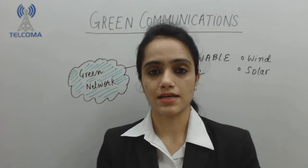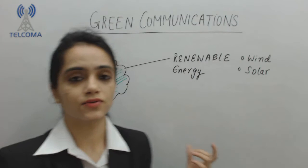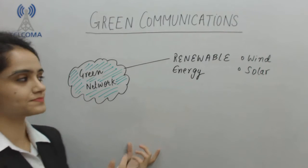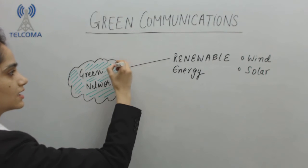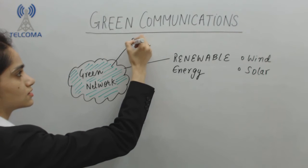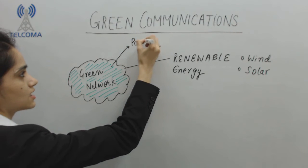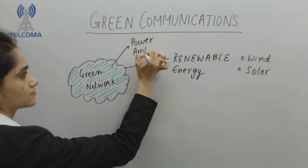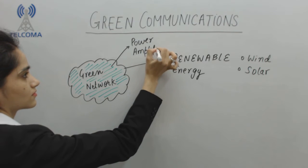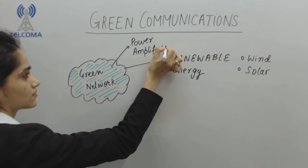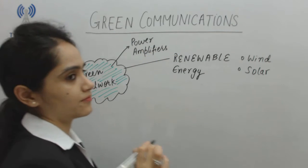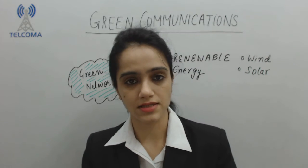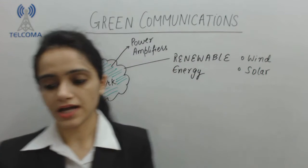Use of renewable energy is the very first aspect in a green network. Next, we are going to use power amplifiers, which are required to amplify the power constraint.